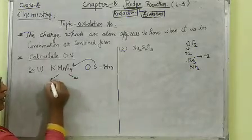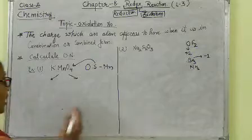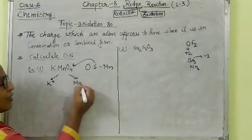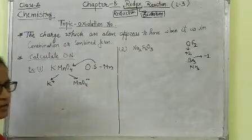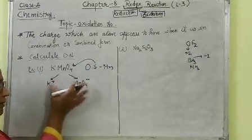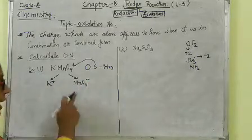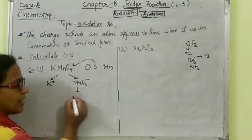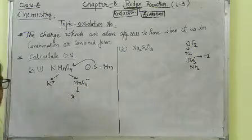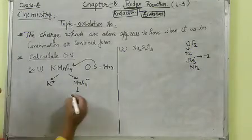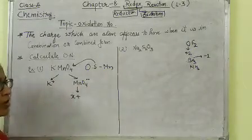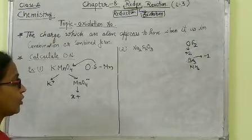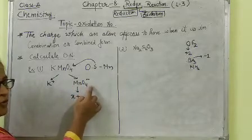The first method: break down the compound into its ions. We know that KMnO4 dissociates into K-plus and MnO4-minus. Now, MnO4-minus: let the oxidation number of Mn be X. Oxygen in MnO4 is more electronegative, so oxygen is in the minus 2 state. One oxygen contains minus 2 charge, and there are 4 oxygens.